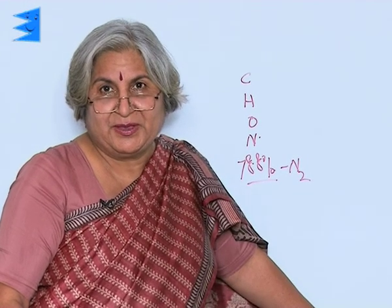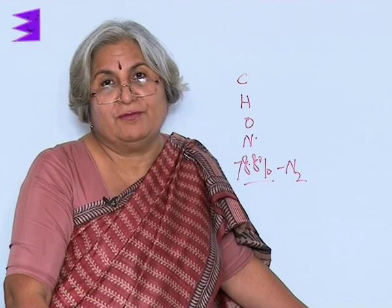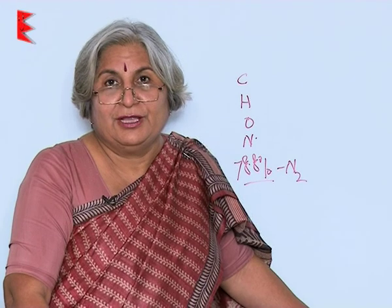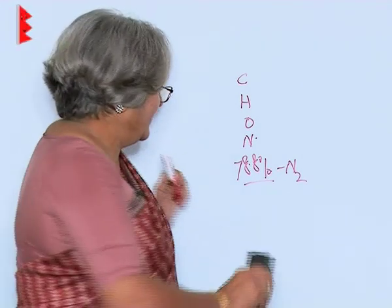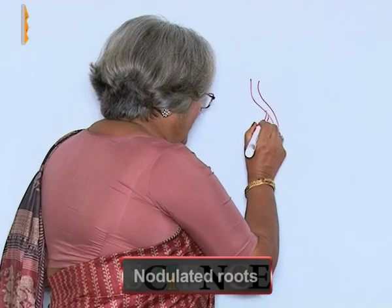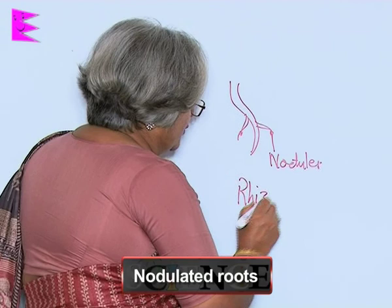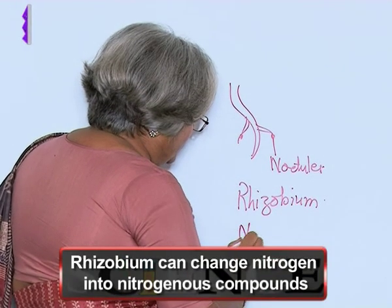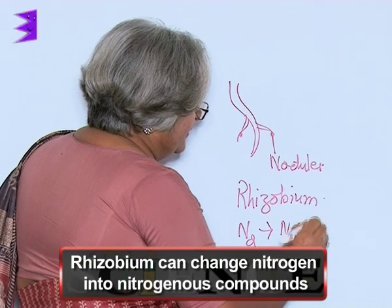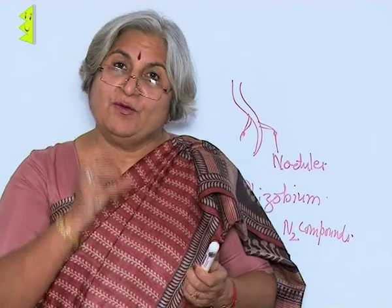Though plants cannot directly utilize nitrogen, there are some bacteria and blue-green plants which can change nitrogen into a usable form of nitrogen-containing compounds. There are also bacteria in some plants like pea, gram, beans, and pulses — they all have special types of roots called nodulated roots. These structures are called nodules, in which there are bacteria like Rhizobium. This bacteria can change nitrogen into nitrogen compounds.